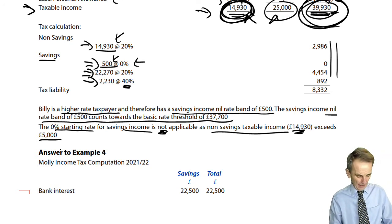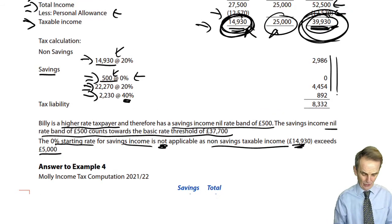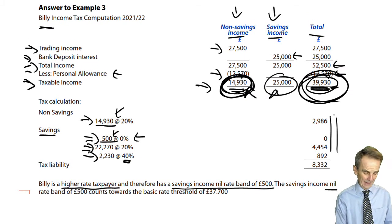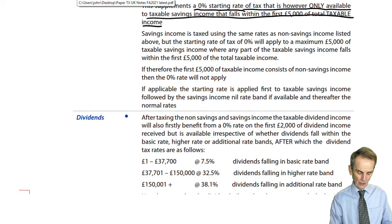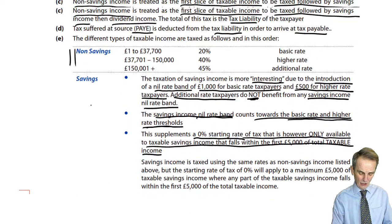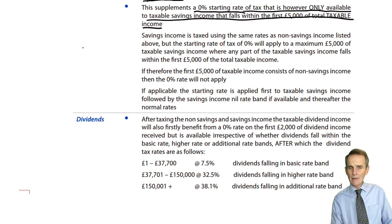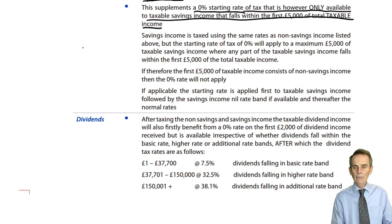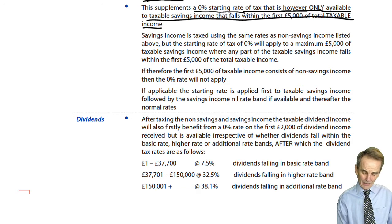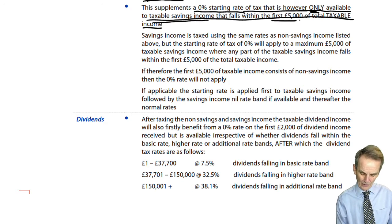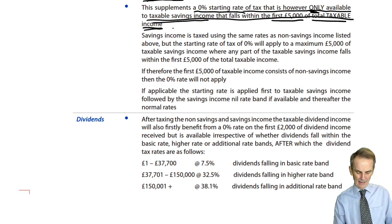Going back to your notes on page seven, we've dealt with the availability of the savings income nil rate band, but we've not yet seen an example where the 0% starting rate band would be available to us. It's only available to taxable savings income if it falls within the first £5,000 of total taxable income. If the non-savings taxable income was £5,000 or more, you can forget about the 0% starting rate.